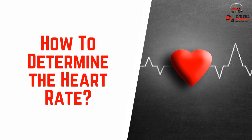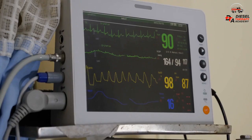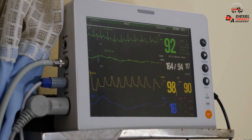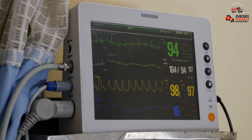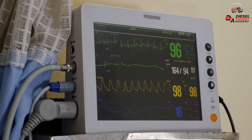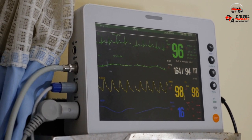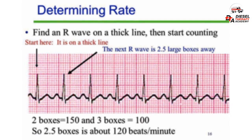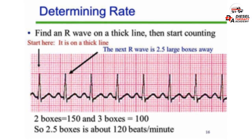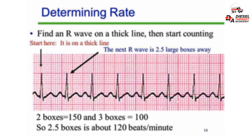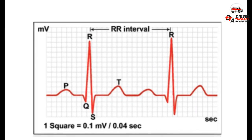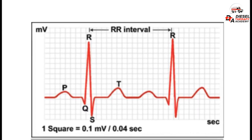Determine the heart rate. The QRS identifies the R-wave, the positive wave above the isoelectric baseline. Using a six-second strip, measure the R-to-R intervals between QRS segments and determine if the rhythm is regular or irregular.